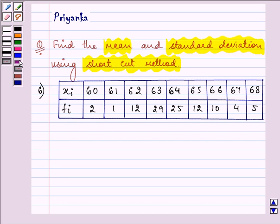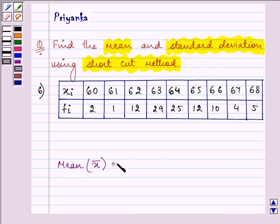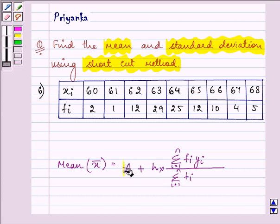Before proceeding we should be well versed with the shortcut method for finding mean and standard deviation. First of all, their formulas. X bar is equal to a where a is the assumed mean plus h multiplied by, in the numerator summation fi yi where i is equal to 1 to n, and in the denominator we have summation fi where i is equal to 1 till n. Now here what is a, h and yi will be more clearer to you once this method is used by me in this question.